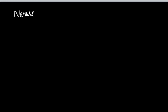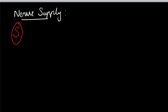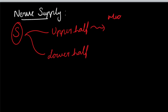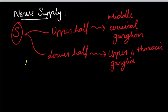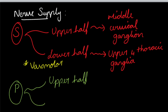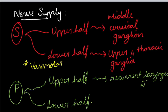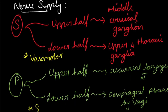Now regarding nerve supply. For sympathetic innervation, the esophagus is divided into upper and lower halves. The upper half receives fibers from the middle cervical ganglion, and the lower half from the upper fourth thoracic ganglion. Sympathetic activity is vasomotor. For parasympathetic innervation, the upper half is supplied by the recurrent laryngeal nerve, and the lower half by the esophageal plexus formed by the vagus nerve. Parasympathetic activity is sensory, motor, and secretomotor.